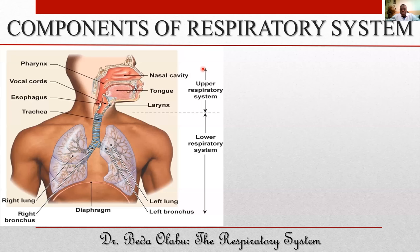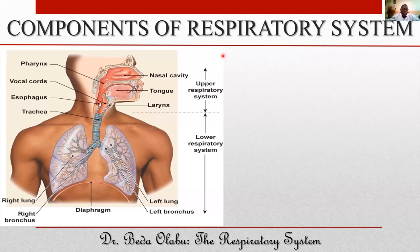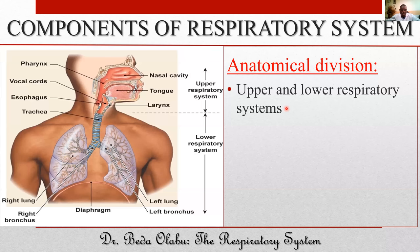When you look at the components of the respiratory system, we can view it from an anatomical perspective and also from a functional perspective. Anatomically, we divide the components of the respiratory system into two: we have the upper respiratory system and the lower respiratory system, commonly called the upper respiratory tree and the lower respiratory tree.